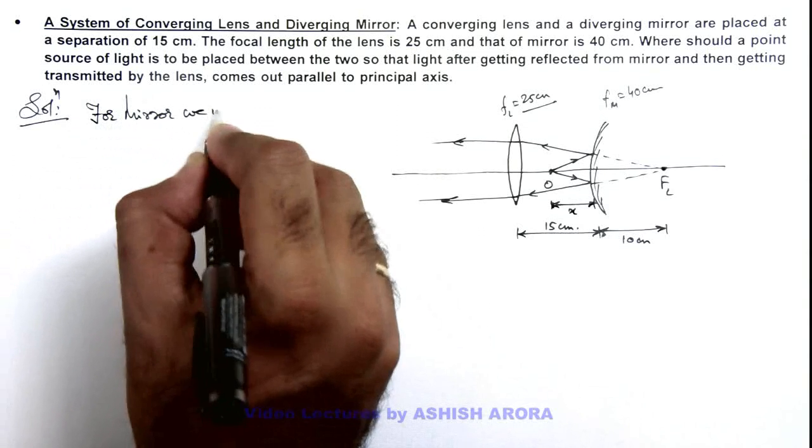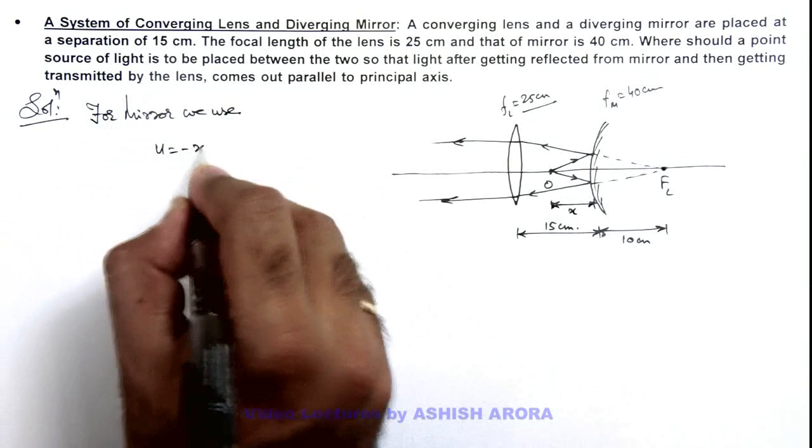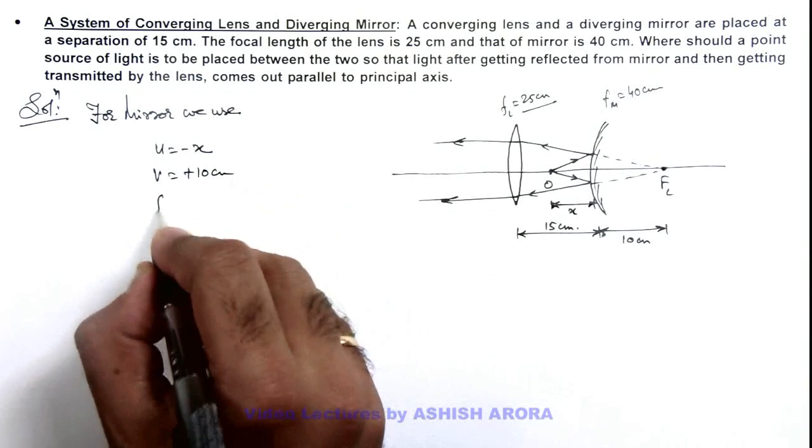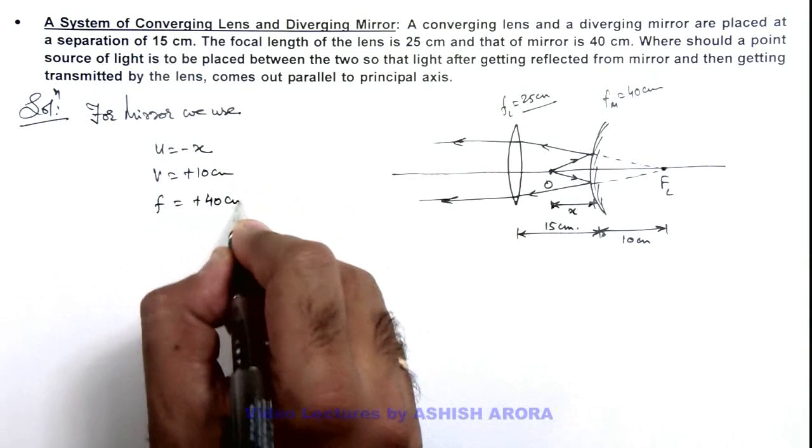We use u equals minus x, v equals plus 10 centimeters, and focal length is also taken as plus 40 centimeters.